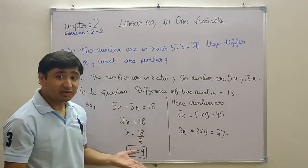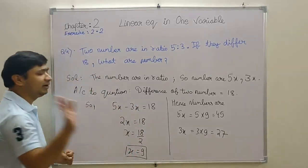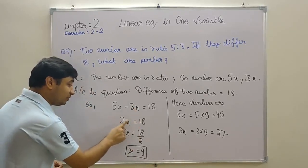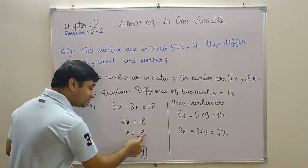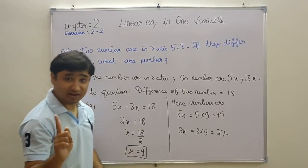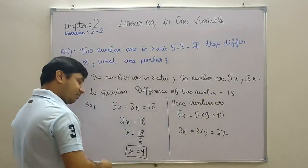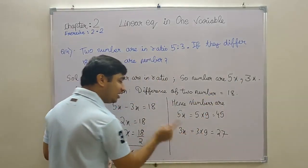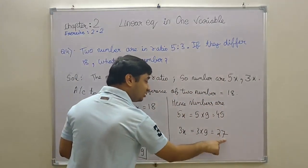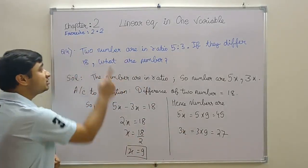So 5x minus 3x equals 18. 5x minus 3x, what is it? Yes, 2x. Very good, all brilliant students are in my class. So 2x equals 18. When two things are in multiplication, they go to division. So x equals 18 divided by 2, x is 9. This is not your answer. The answer is we need 5x and 3x, meaning we put the x value in 5x and 3x. How? 5 times 9 is 45, 3 times 9 is 27. So I hope you know your tables, right? So this is our fourth question.